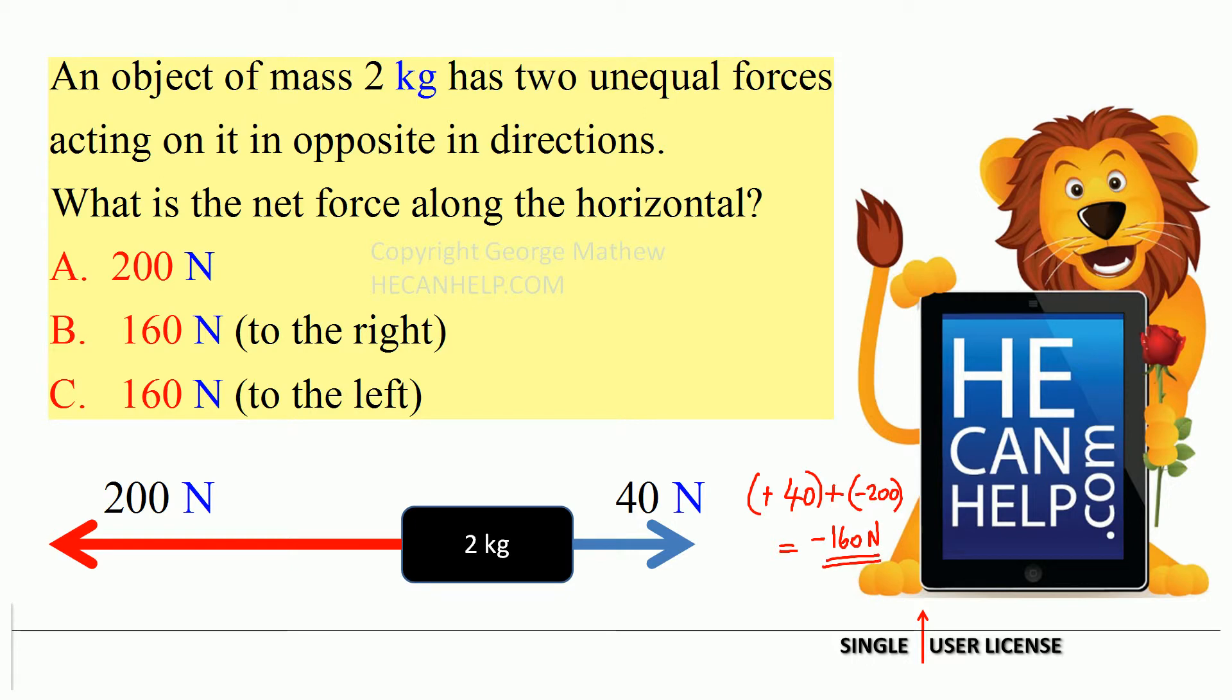It means that the net force is 160 in magnitude, it is to the left. So net force is to the left. It makes sense: 200 to the left, 40 to the right, net force is 160 newtons to the left. So the answer is C.